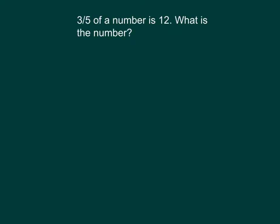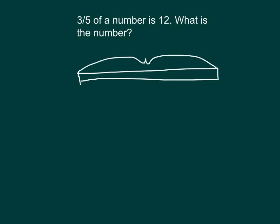Here is another problem: three fifths of a number is 12. What is the number? This problem is different in that we know how much three fifths of the number is, but we don't know the actual number — in other words, we don't know the whole. Three fifths of a number is only a part of the whole. We can still draw the tape diagram, and in this case, the whole is the question mark.